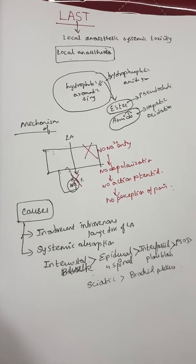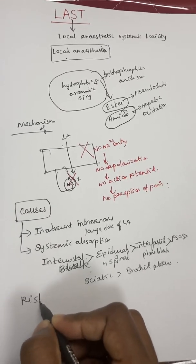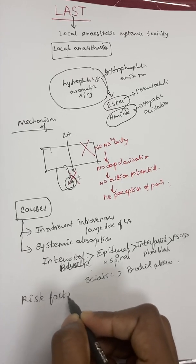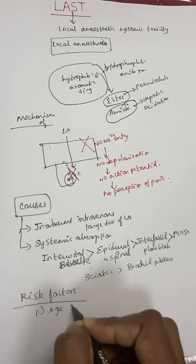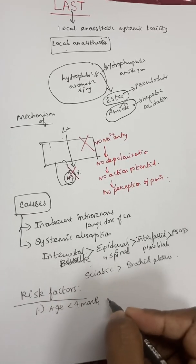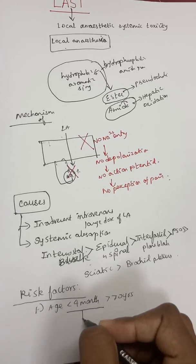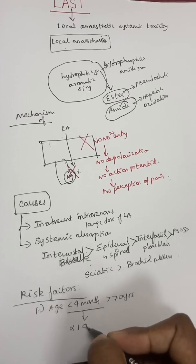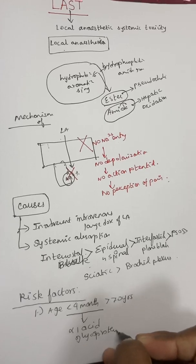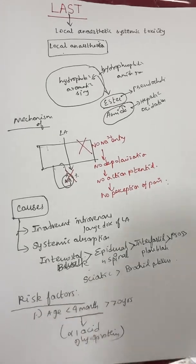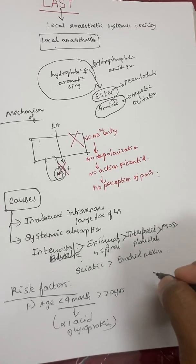Coming to the risk factors for LAST: age less than four months and age greater than 70 years are significant risk factors. In infants less than four months, the liver is immature, so production of alpha-1-acid glycoprotein is low. To understand this properly, we need to review some physicochemical properties of local anesthetics.